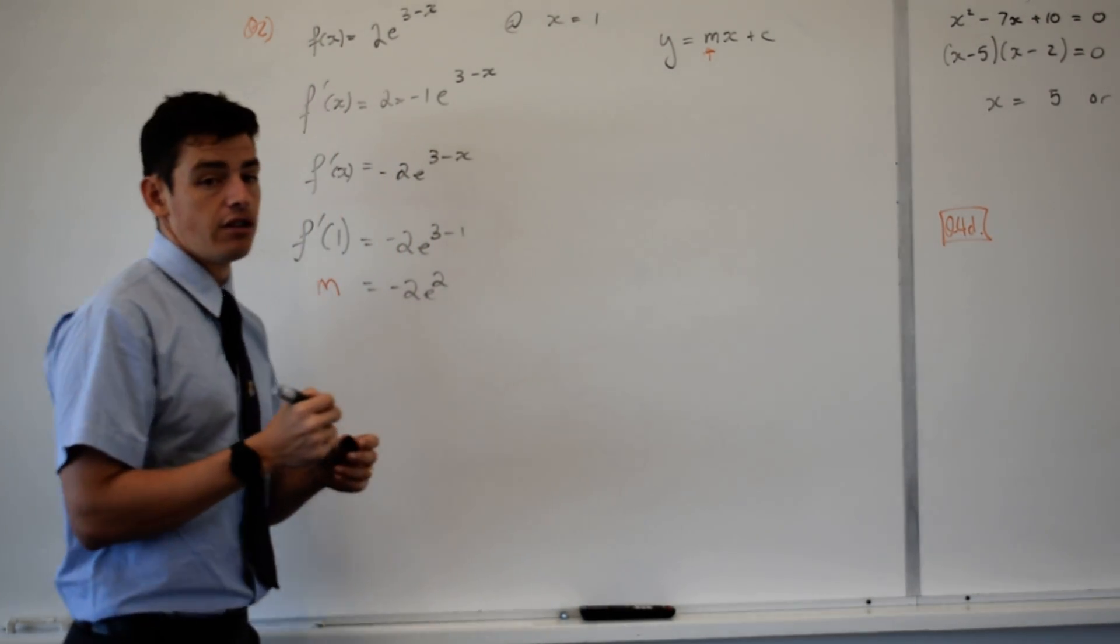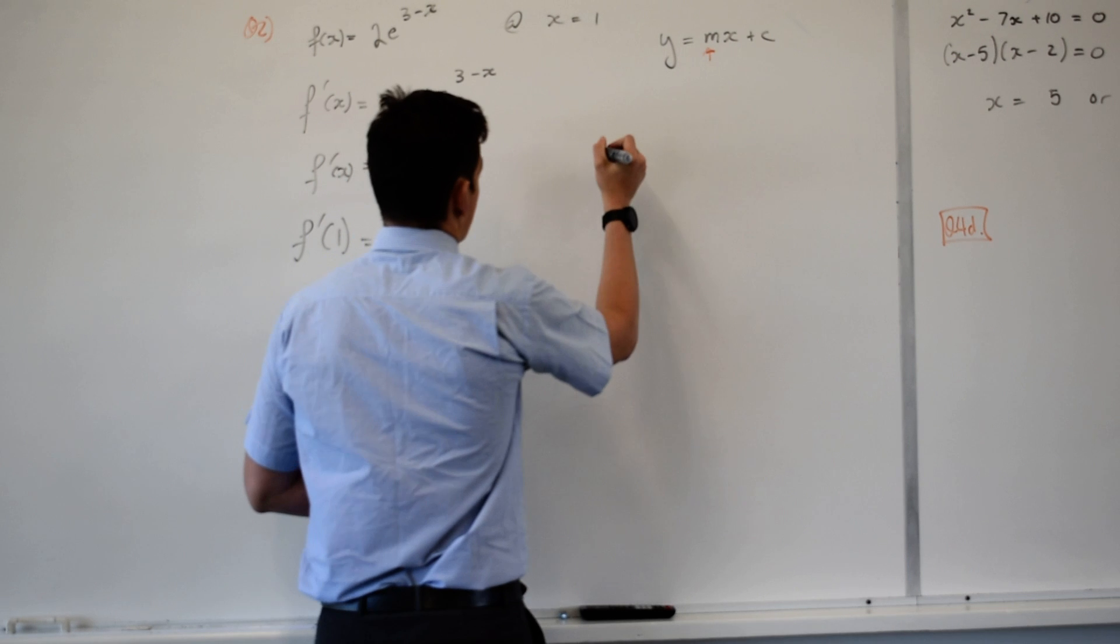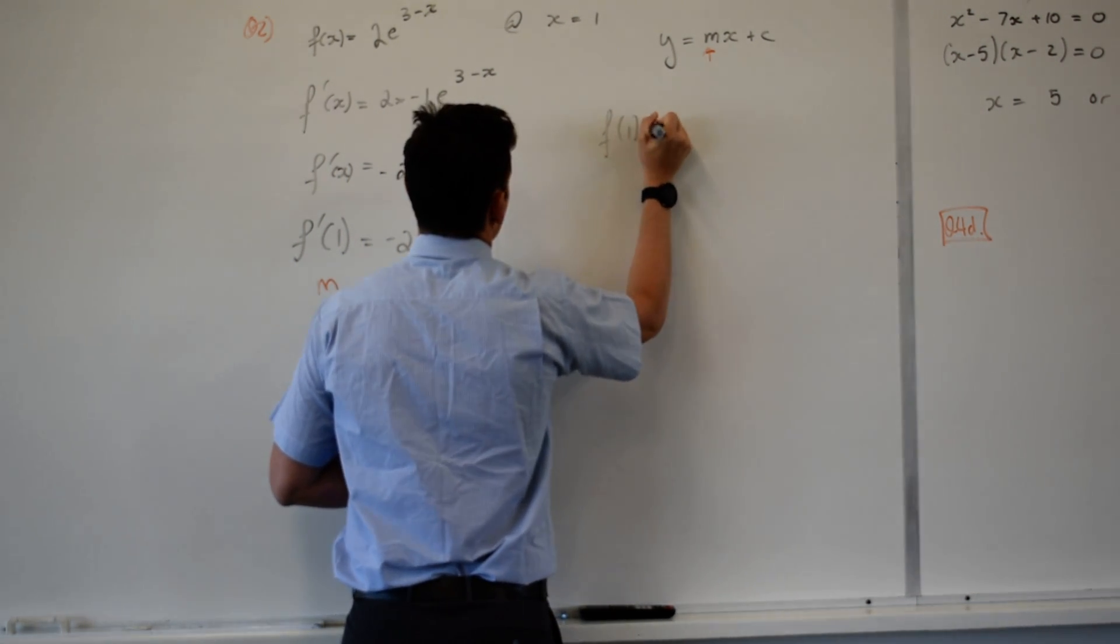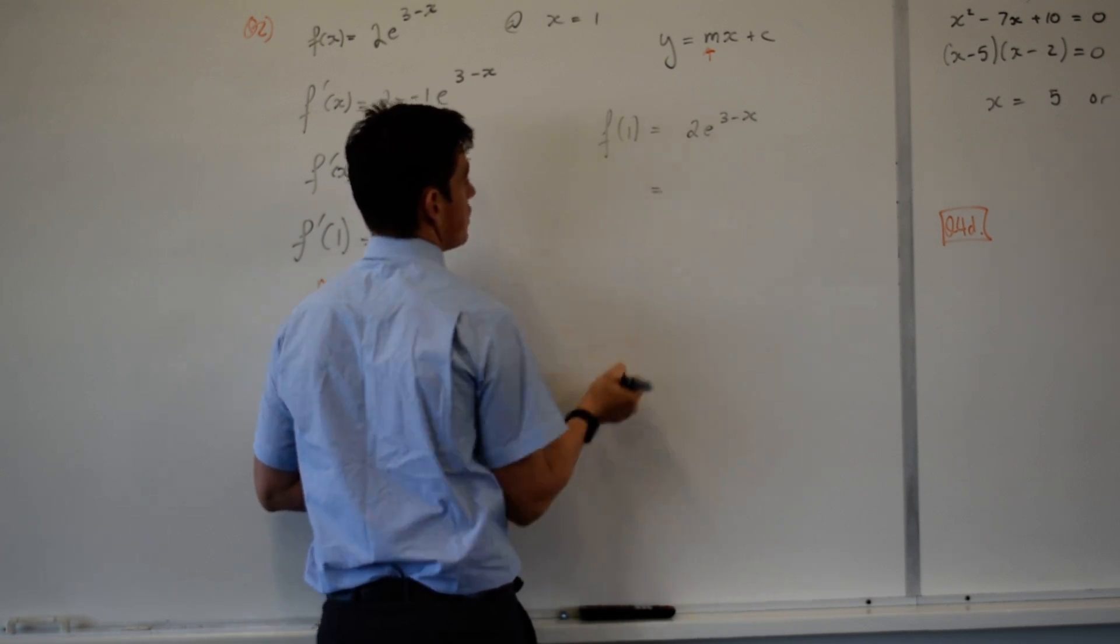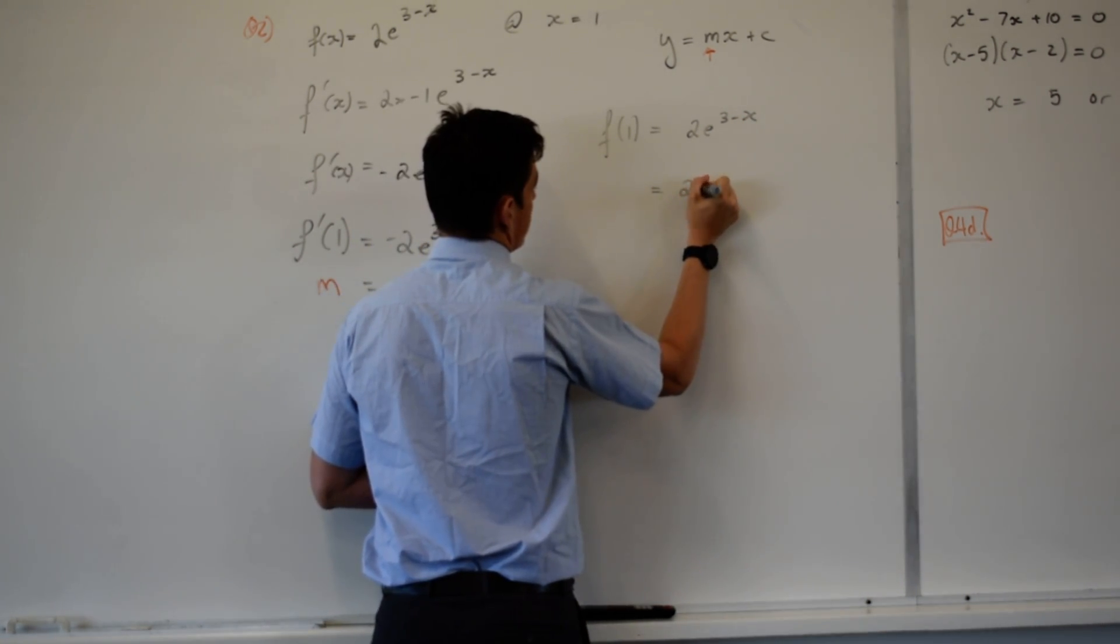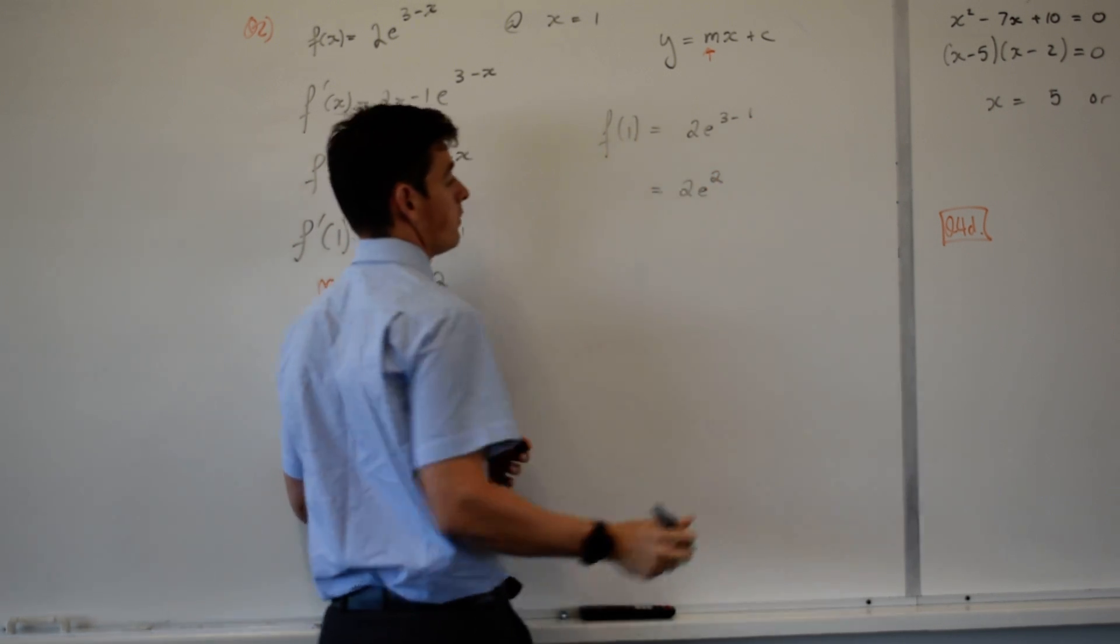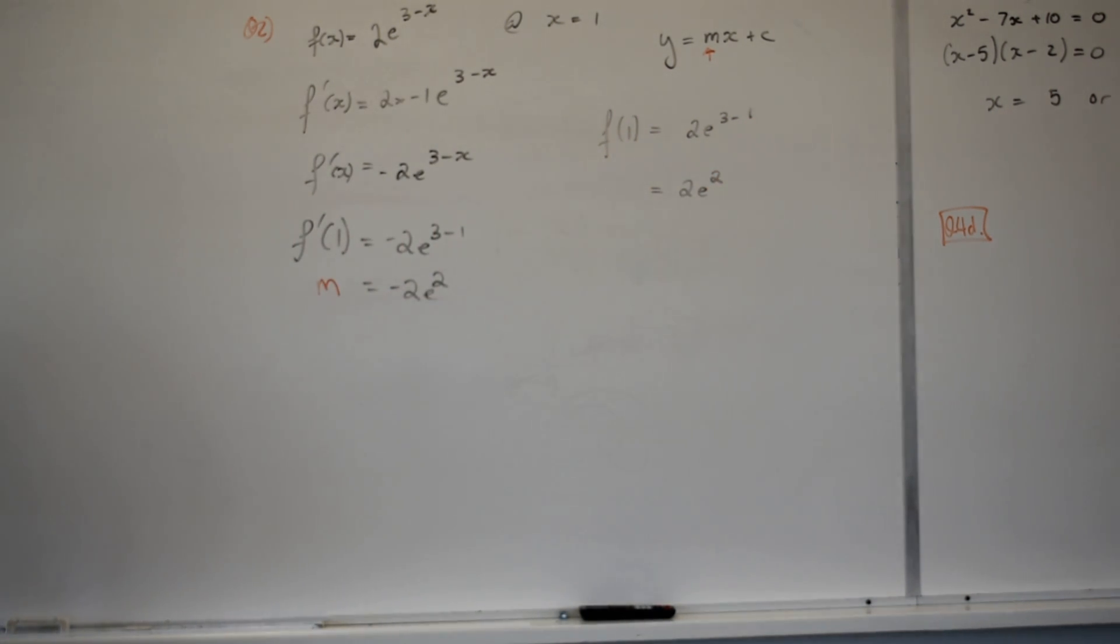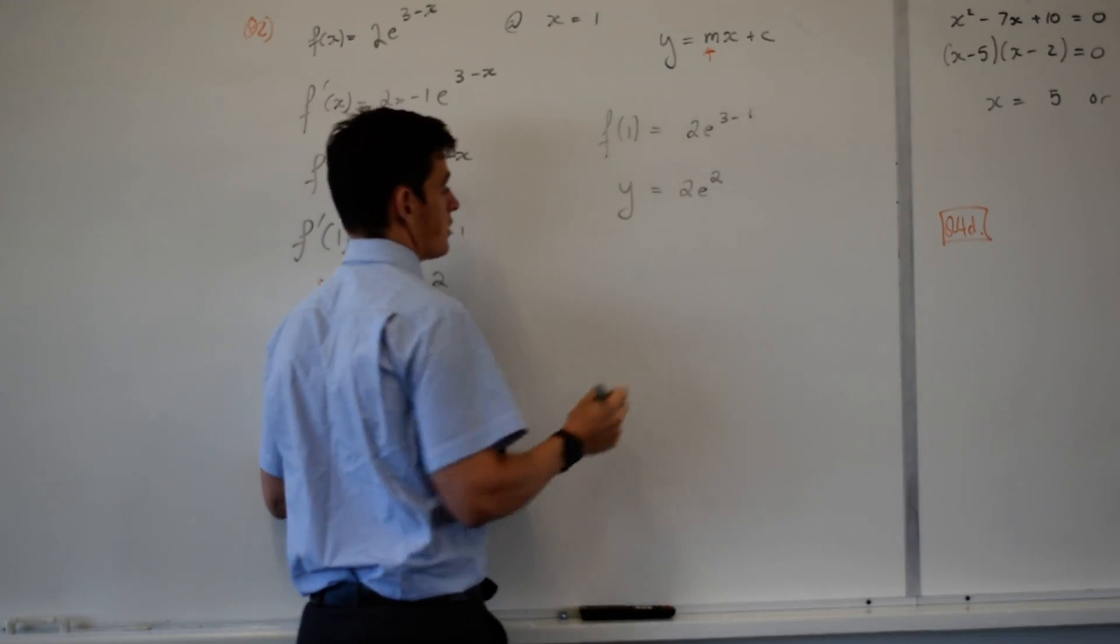How do I find my y value? Sub x equals 1 into my original function. So f of 1 equals 2e to the 3 minus x, which is 2e to the 2. So 1, 2e to the 2. Do I know y now? I'm just going to call this y because of the simplicity.